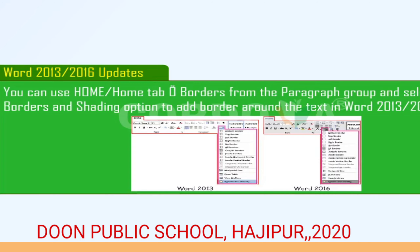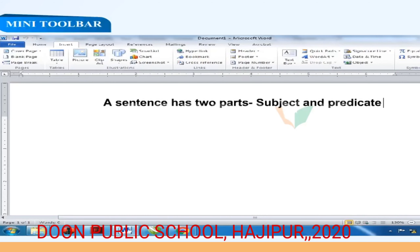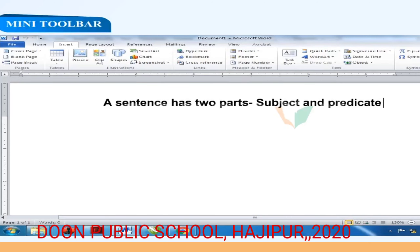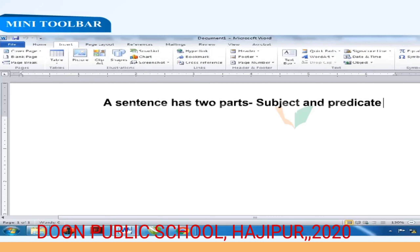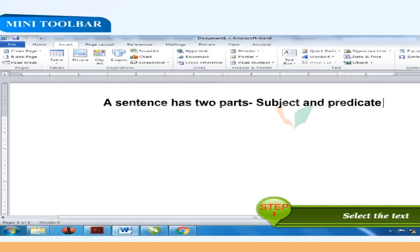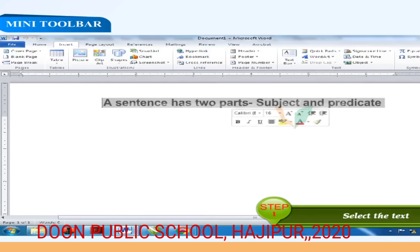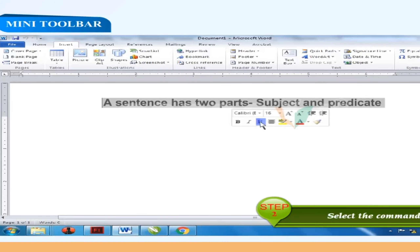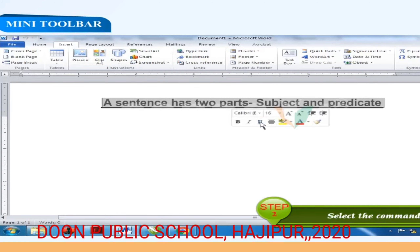The Mini Toolbar contains commonly used formatting commands of the Home tab. It appears when you select text in the document area and is used to make changes in your document quickly. To use the Mini Toolbar: Step 1: Select the text — a transparent Mini Toolbar appears. Step 2: Move the mouse over the toolbar and select the appropriate commands. If you do not use the Mini Toolbar, it disappears.